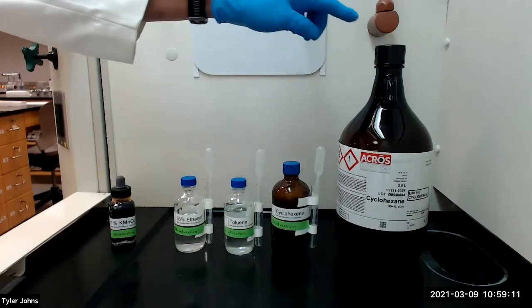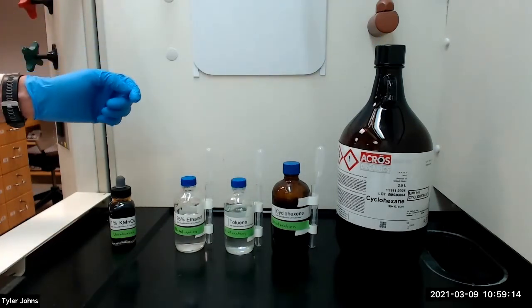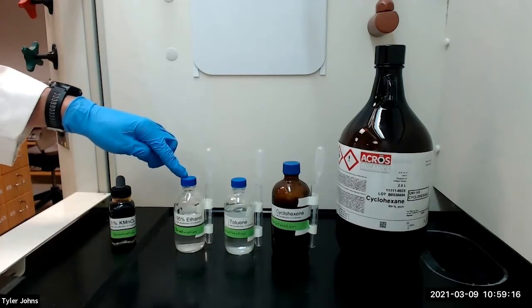We will add two drops of each of the known compounds to three separate test tubes, and then add two milliliters of 95% ethanol to each test tube.